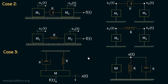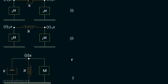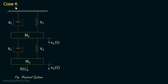Moving on to case number four, we have a more complex vertical mechanical system. A damper B1 and spring K1 are connected between a fixed support and mass M1. A damper B2 and spring K2 connect mass M1 to mass M2. A force F is applied downward on mass M2, causing displacement x2(t). Because the springs and dampers are connected between two masses, mass M1 also undergoes a displacement x1(t), giving two different displacements in the system.